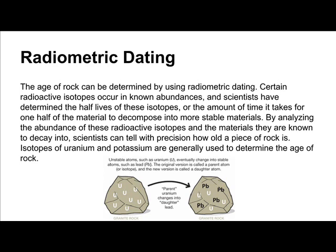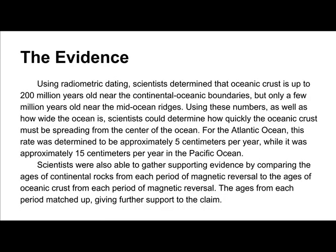Isotopes of uranium and potassium are generally used to determine the age of rock. Using radiometric dating, scientists determined that oceanic crust is up to 200 million years old near the continental oceanic boundaries, but only a few million years old near the mid-ocean ridges. Using these numbers, as well as how wide the ocean is, scientists could determine how quickly the oceanic crust must be spreading. For the Atlantic Ocean, this rate was approximately 5 centimeters per year, while it was approximately 15 centimeters per year in the Pacific Ocean.